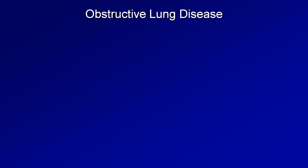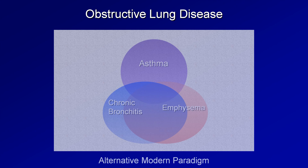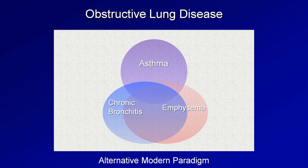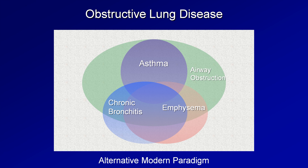Let me return to the Venn diagrams and show one that better illustrates how COPD relates to the other diagnoses. This diagram shows much more overlap between chronic bronchitis and emphysema, since they usually but not always coexist. Layered on top, I'll add the finding of airway obstruction, defined by abnormal pulmonary function tests or tests of peak flow during exacerbations. Everyone with asthma has some degree of airway obstruction, and most people with chronic bronchitis and/or emphysema also have airway obstruction. Importantly, some people with airway obstruction on PFTs have neither asthma, chronic bronchitis, nor emphysema — these would be patients with bronchiectasis and cystic fibrosis.